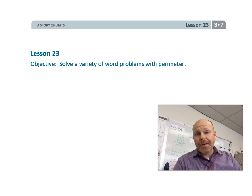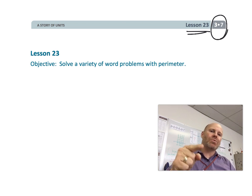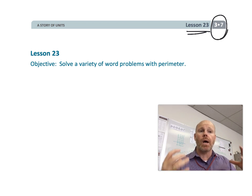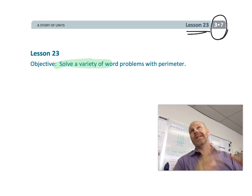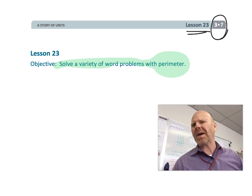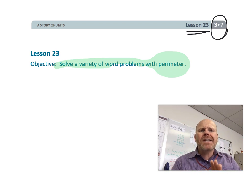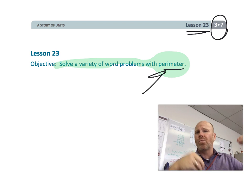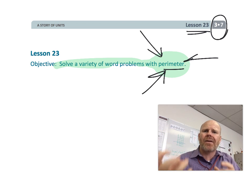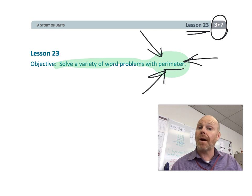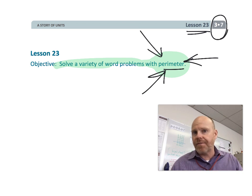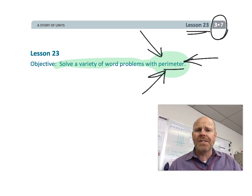All right, this is third grade, module 7, lesson 23. In this lesson, students are going to be solving a whole bunch of different word problems involving perimeter, although area might show up. The idea for parents and teachers is to give students a nice opportunity to practice, keeping in mind what is perimeter, what does it mean, how does it relate to area. So this is a great formative assessment opportunity to see how much your students really do remember all the stuff that you've been teaching them in the previous lessons. So let's get started.